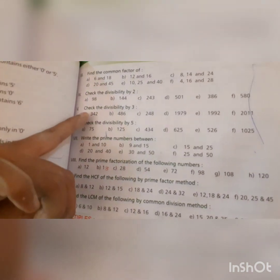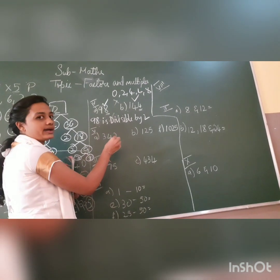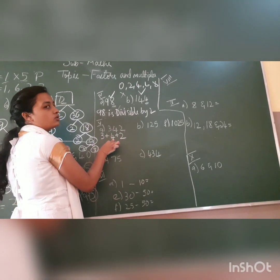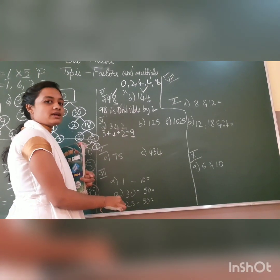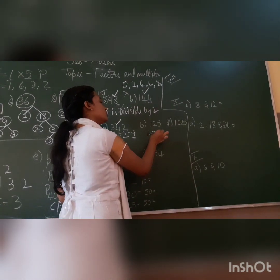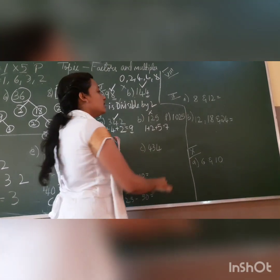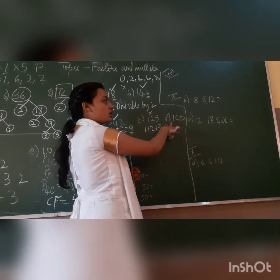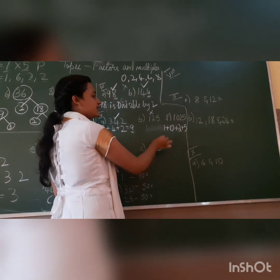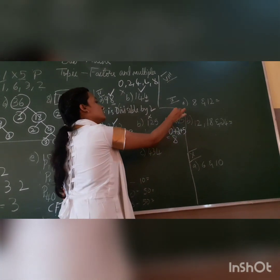5th question: check the divisibility by 3. To check if a number is divisible by 3, add all its digits. The answer should be in the 3 times table. For 342: 3 + 4 + 2 = 9. Do I get 9 in the 3 times table? Yes, so 342 is divisible by 3. For 125: 1 + 2 + 5 = 7. 7 is not in the 3 times table, so it is not divisible by 3. For 1025: 1 + 0 + 2 + 5 = 8. 8 is not in the 3 times table, so not divisible by 3.